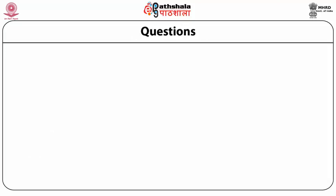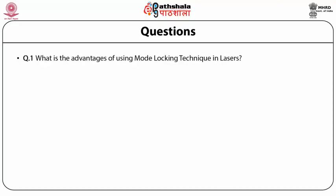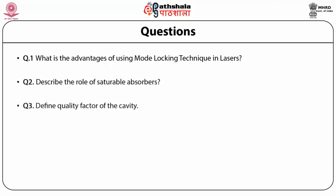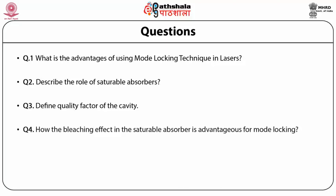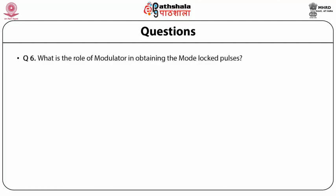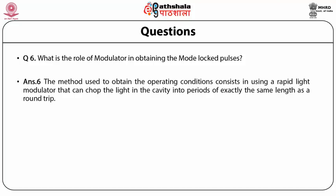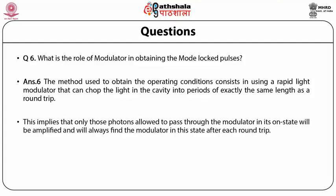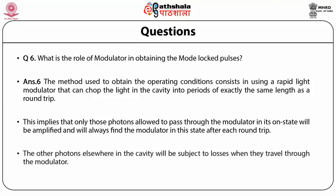Possible questions include: what are the advantages of using mode locking in lasers and the role of saturable absorbers, what is the quality factor of the cavity and how the bleaching effect in a saturable absorber is advantageous for mode locking, and what is mode pulling. Regarding the role of the modulator in obtaining mode-locked pulses: the method uses a rapid light modulator that chops the light in the cavity into periods of exactly the same length as a round trip. Only those photons allowed to pass through the modulator in its open state are amplified, always finding the modulator in that state after each round trip; other photons are subject to losses.